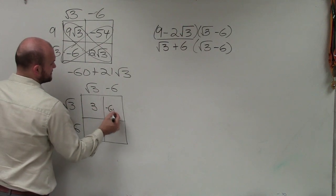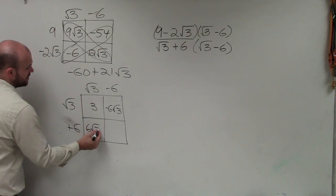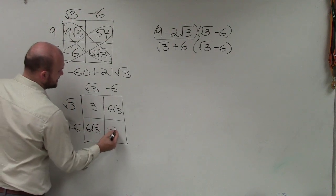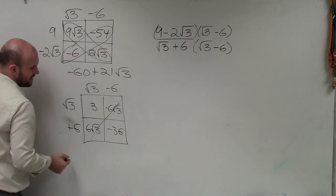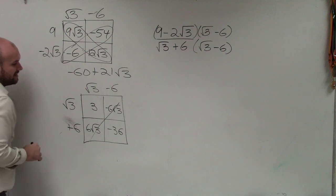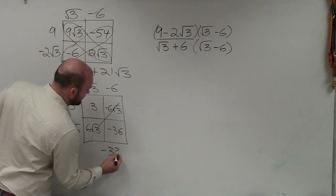Square root of 3 times negative 6 is negative 6 square root of 3. Square root of 3 times positive 6 is 6 square root of 3. And 6 times negative 6 is negative 36. You can see that's negative, that's positive, they eliminate out. 3 plus negative 36 is just going to leave me with a negative 33.